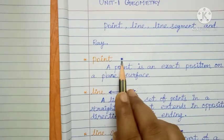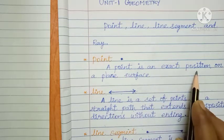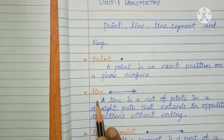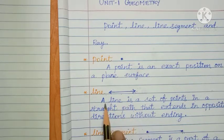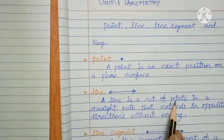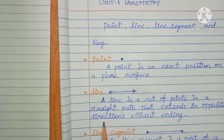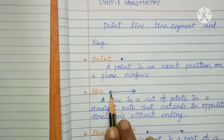Point — a point is indicated by a dot. A point is an exact position on a plain surface. Next, write line in your classwork. Draw the line and give the arrow symbol. A line is a set of points in a straight path that extends in opposite directions without ending. This line does not end, that is why we use the arrow symbol. This is called a line.